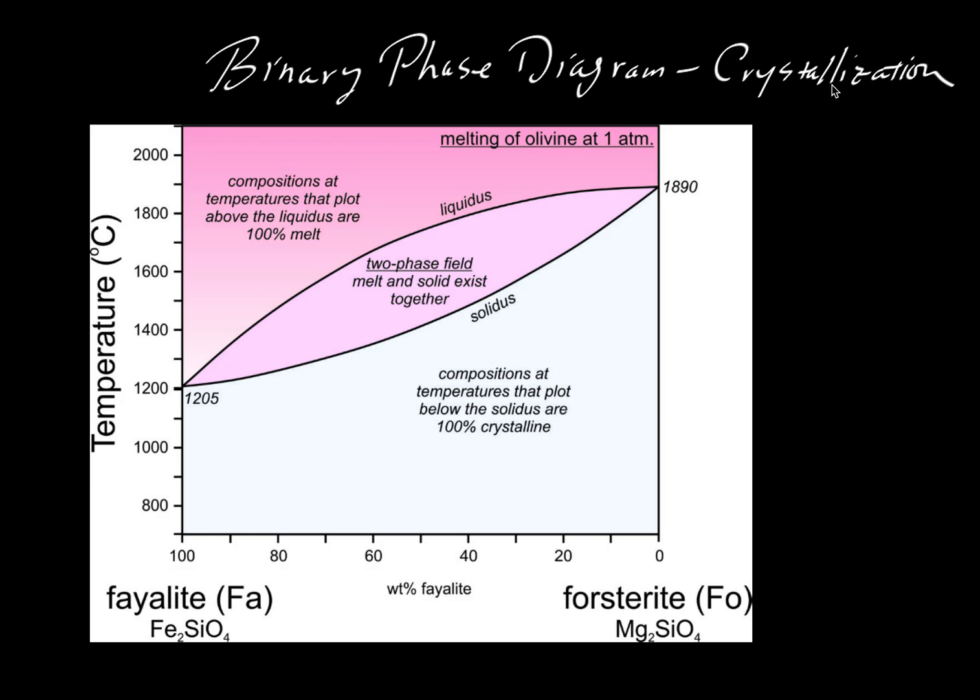In an earlier video, we looked at equilibrium crystallization. Here we're going to look at a case of fractional crystallization. So when we talk about fractional crystallization, we use this term very generally, but what we really mean is a very specific kind of process where crystals, where I will abbreviate that as XTLS, are removed from the liquid in which they are forming as soon as they are formed.